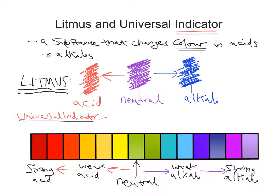So you can see as you move along this scale, we're able to get a range of colours — not just red and blue like with litmus. This colour scale with the universal indicator allows us to go from very dark red all the way through to quite dark bluey-purple, giving us a range of colour that shows whether an acid or alkali is particularly strong or weak.